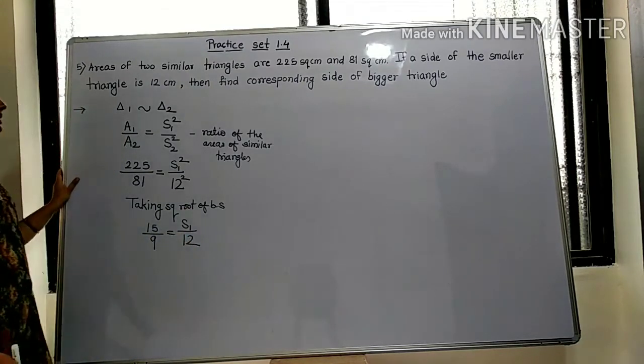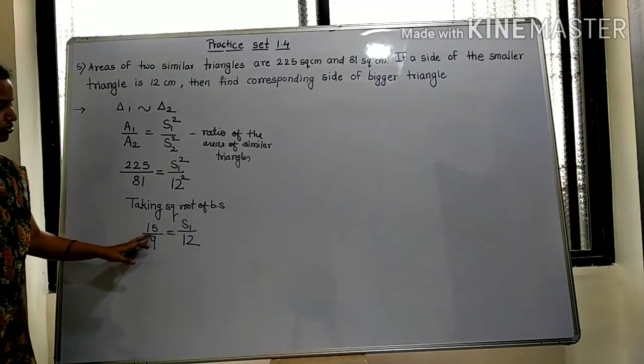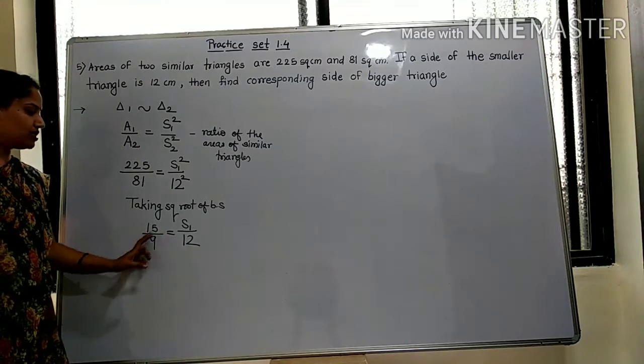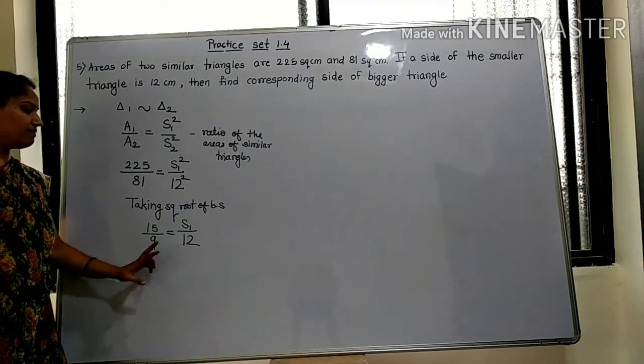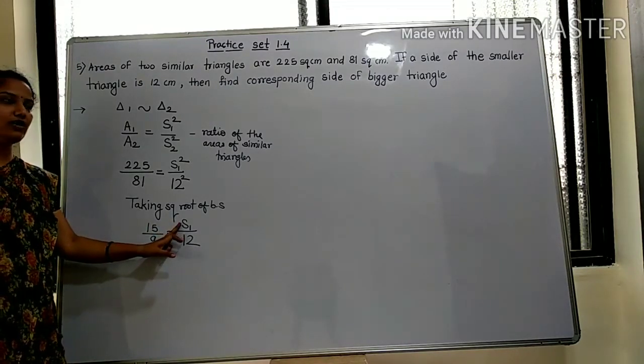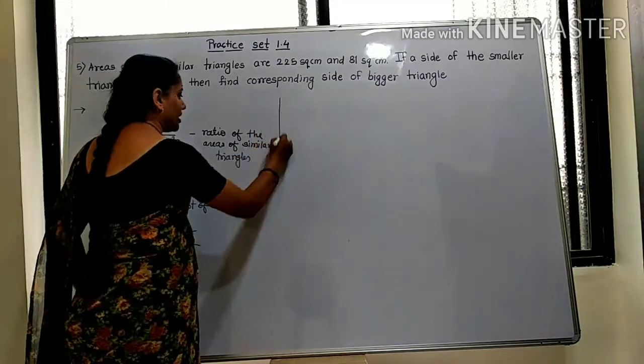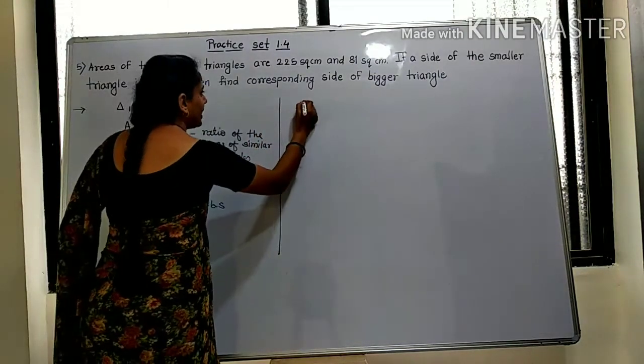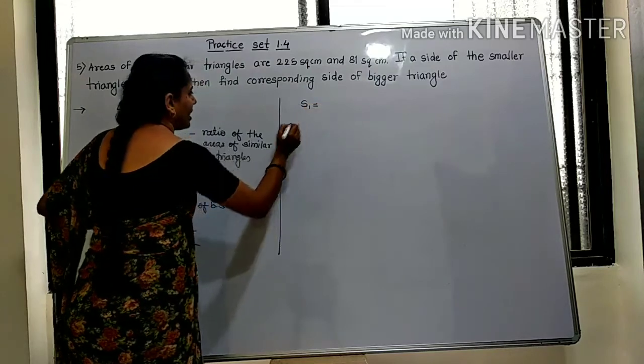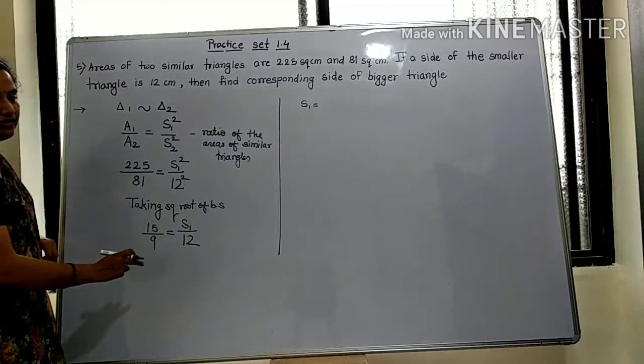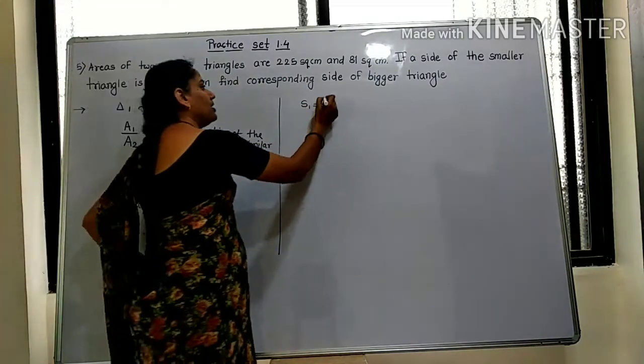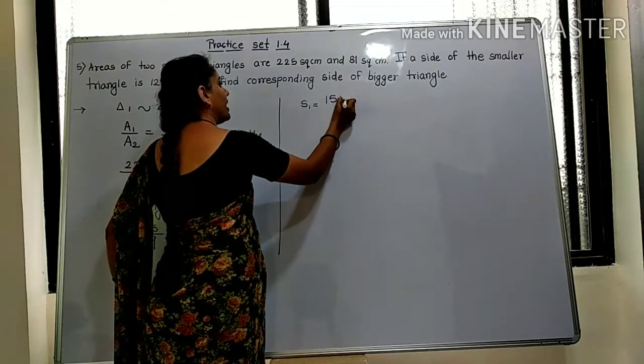is 12. Now we have the ratio 15 upon 9 equals S1 upon 12. To find S1, we can cross multiply: 15 times 12